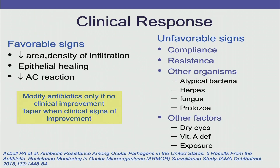Favorable signs include decrease in the area and density of infiltration, epithelial healing, and decreased AC reaction. Modify antibiotics only if there is no clinical improvement, and taper and stop the antibiotics when there are clinical signs of improvement. If the culture sensitivity report says otherwise but clinically the patient is improving, change nothing — clinical response is the best test.